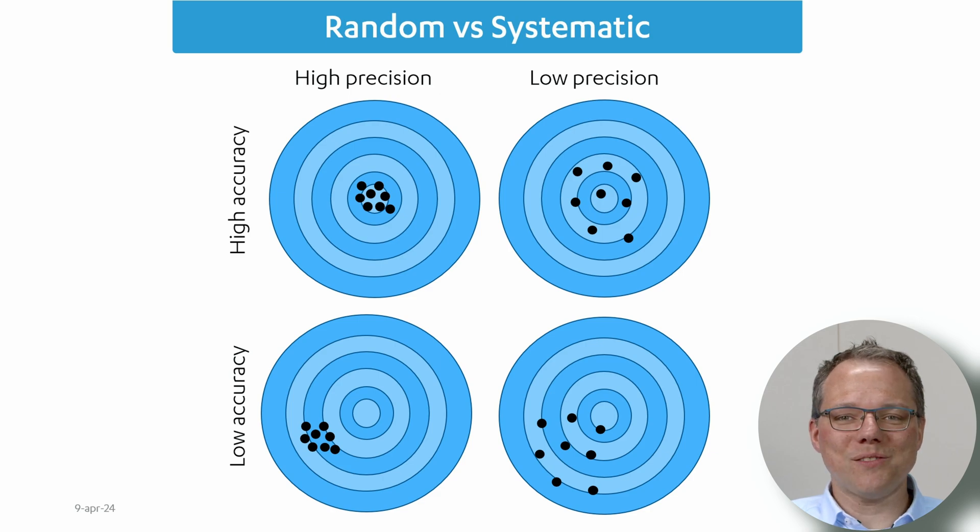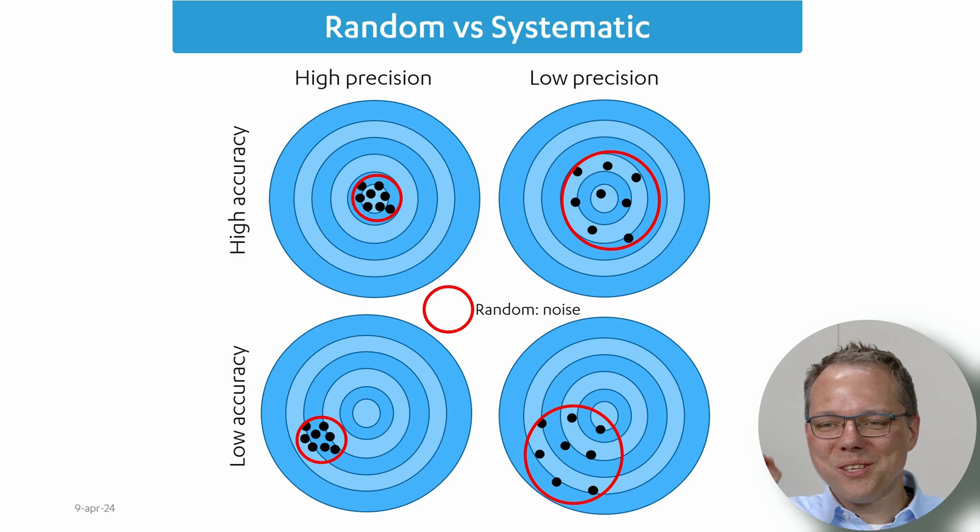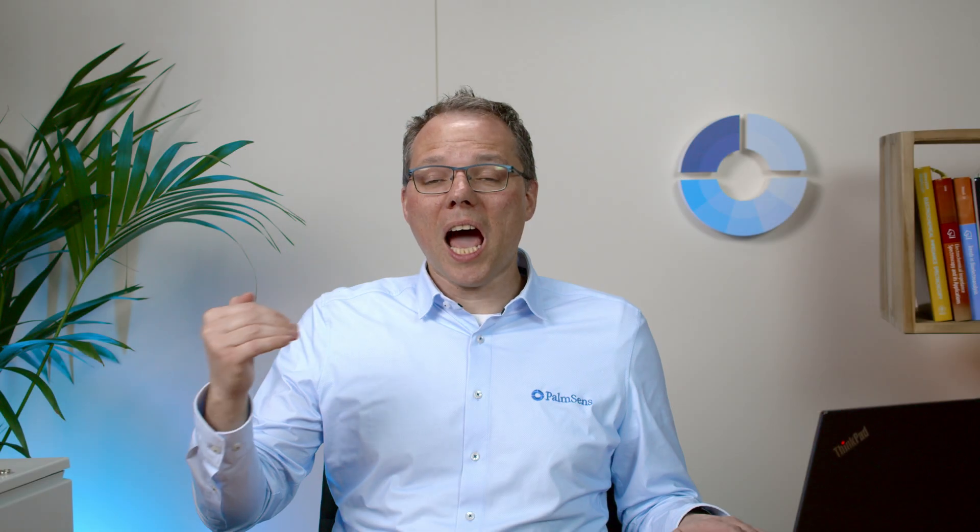You most likely have seen similar graphs for explaining accuracy and precision. Precision tells you how close together are values that you measure for the same measurement and accuracy tells you how far you are away from the true value. In this case we are looking at basically how big does the circle have to be to circle all the values that we measure with one measurement.